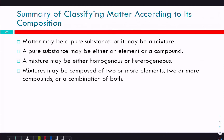To summarize: matter can be a pure substance or a mixture. Pure substances can be elements or compounds. Mixtures may be homogeneous or heterogeneous, and can be composed of two or more elements, two or more compounds, or a combination of both, in varying proportions. One way to study this is to write out all these terms and sort them into a decision tree — taking at the first level pure substance versus mixture, then elements or compounds. If you can do that from memory, that's good evidence you've grasped and mastered the concept.